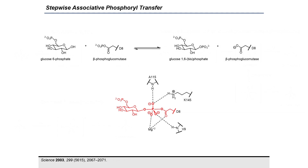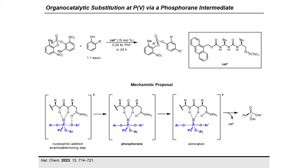There is biochemical evidence for stepwise associative enzymatic phosphoryl transfer reactions. A phosphorane intermediate was characterized crystallographically as an intermediate in the phosphorylation of glucose-6-phosphate catalyzed by beta-phosphoglucomutase to form glucose-1,6-bisphosphate. This pentacoordinate intermediate is a phosphorane with apical bonds to the C1-hydroxyl of glucose-6-phosphate as the nucleophile, and the aspartate residue of beta-phosphoglucomutase as the leaving group.